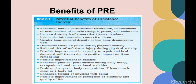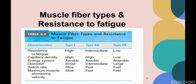Regarding muscle fiber types and resistance to fatigue: Type 1 fibers have high resistance to fatigue, Type 2a has intermediate resistance, and Type 2b has low resistance to fatigue. For capillary density, Type 1 fibers have high density, while Type 2b has low capillary density. Type 1 and Type 2a use the aerobic energy system, while Type 2b uses the anaerobic energy system.